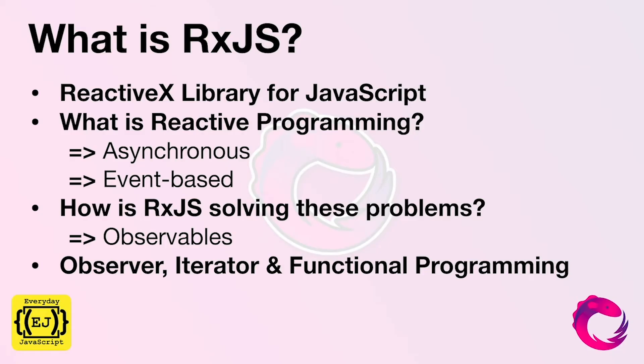What is RxJS? RxJS is a ReactiveX library that helps us in writing reactive programs using JavaScript. What is reactive programming? Reactive programming is something that allows us to compose asynchronous and event-based programs quite easily. As you know, asynchronous and event-based programs are the most used programming patterns in JavaScript, but it comes with a lot of problems.